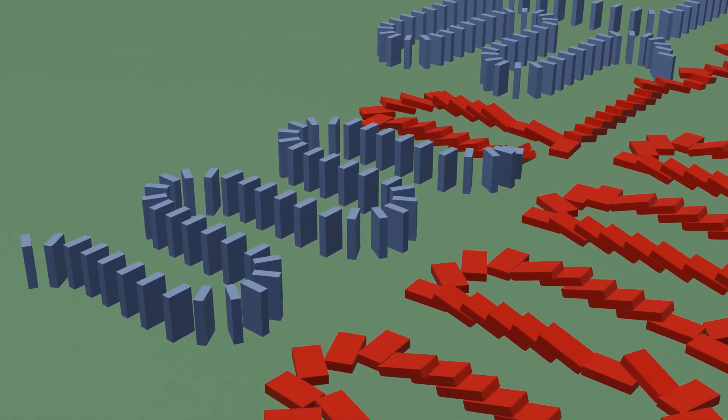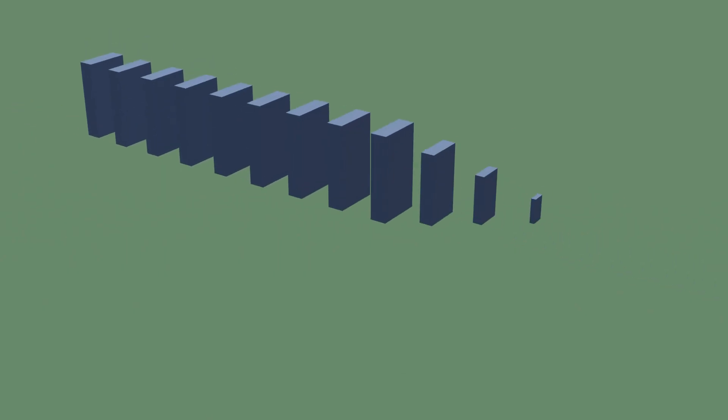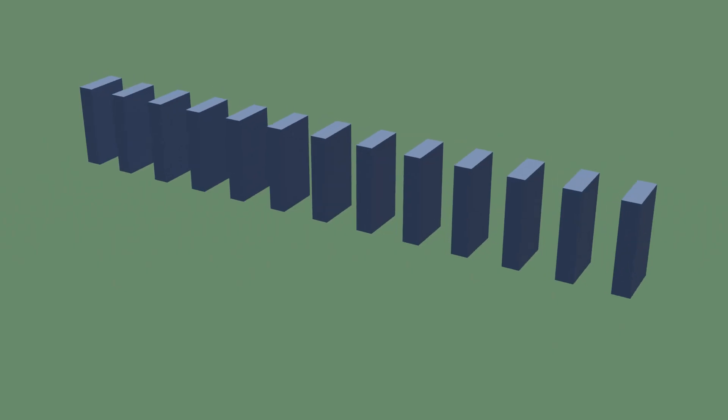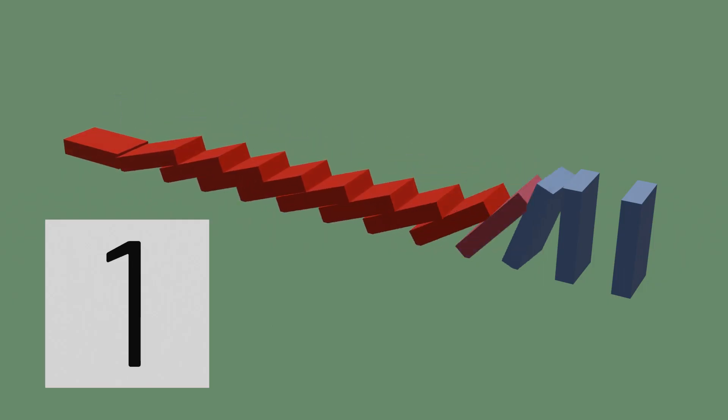So how does this work? Computers are powered by electricity. So if we replace a current flowing through a wire with dominoes falling along a path, we can model that idea. We'll represent a 0, or the absence of electricity, with a standing domino. And we'll represent a 1, the presence of electricity, by toppling a domino and starting a chain reaction.